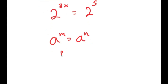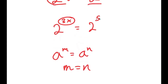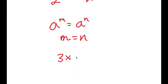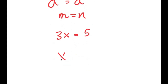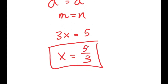Because these two have the same bases — a to the power of m equals a to the power of n means m equals n — so 3x is equal to 5, and x is equal to 5 over 3. That's another method of solving this equation. Please make sure to subscribe, leave a like, and share this with friends or family. Thank you.